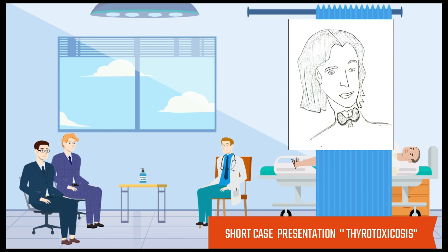The thyroid is diffusely enlarged; it is non-tender, firm in consistency, and has no bruit. There is no retrosternal extension and there is no lymphadenopathy.